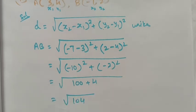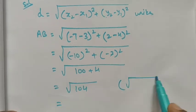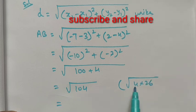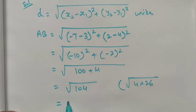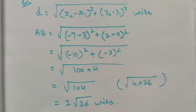104 is 4×26. 104 can be written as 4×26, and 4 is a perfect square number. If you take it outside, we can write it as 2√26 units. Thank you, students.